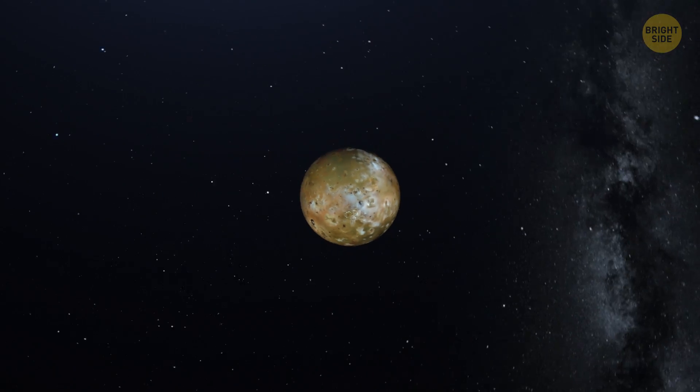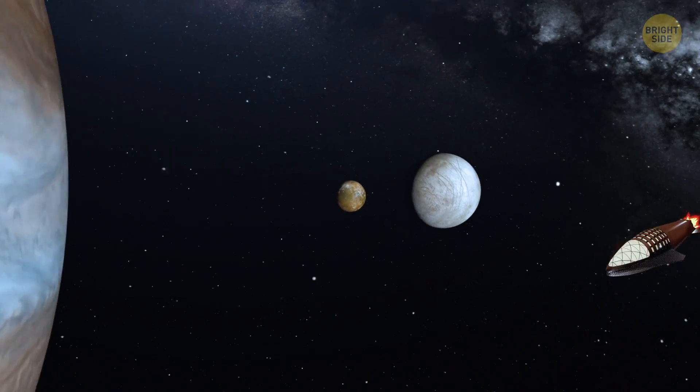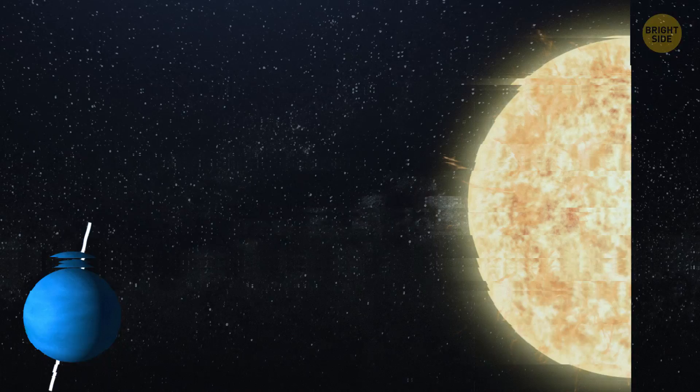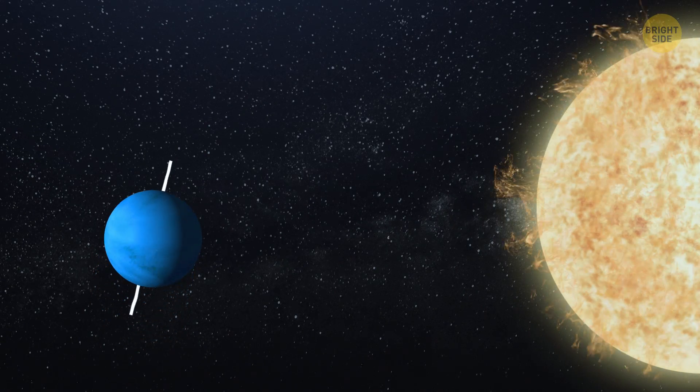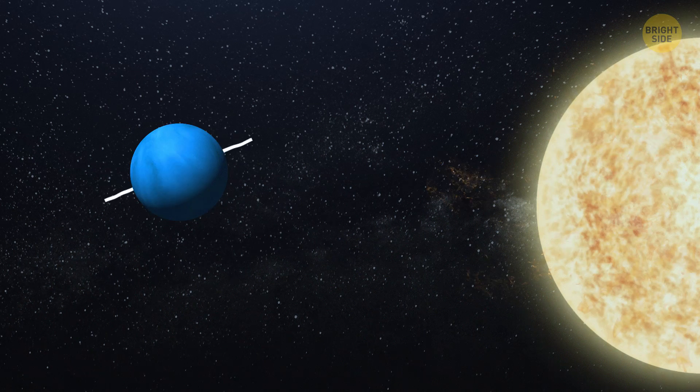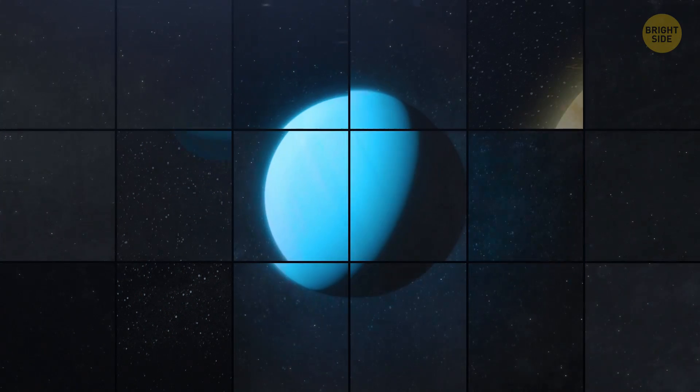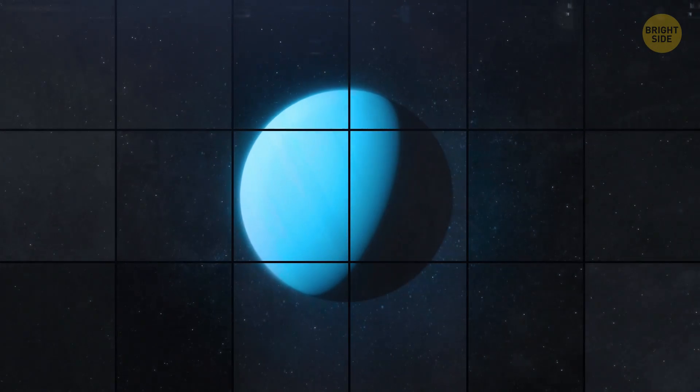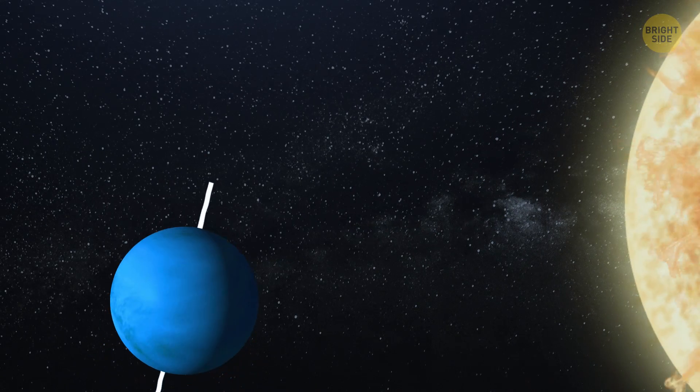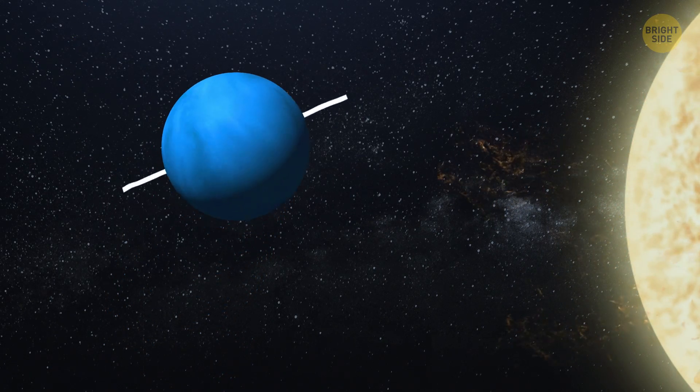But a rocky planet's collision with a gas giant still leaves its mark. For instance, Uranus orbits the Sun lying on its side at a 90-degree angle compared to other planets. Scientists think Uranus ended up like this after it was literally bowled over by an object about twice as big as Earth.